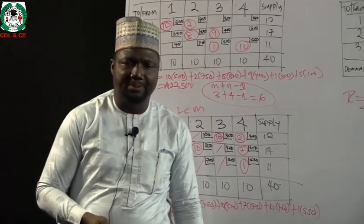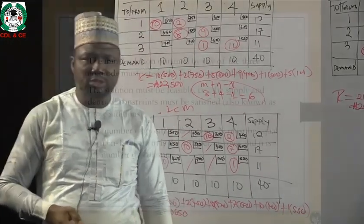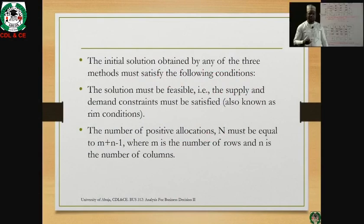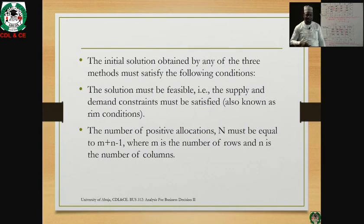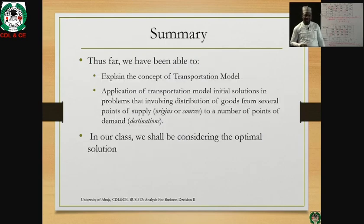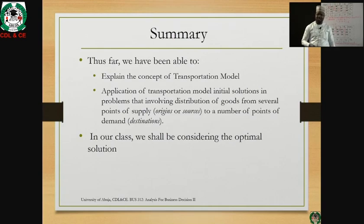The initial solution as obtained by all three methods must satisfy the following conditions. First, it must be feasible — the demand and supply constraints must be satisfied, known as the rim condition. The number of allocations N must equal M plus N minus 1, where M and N represent the number of rows and columns respectively. So far, we've explained the concept of the transportation model and seen its application to the initial solutions.